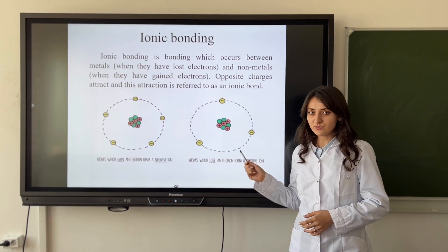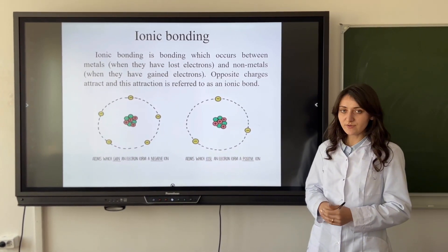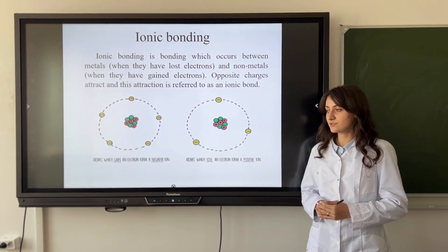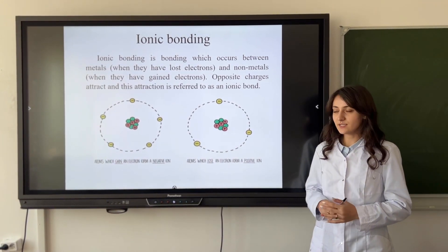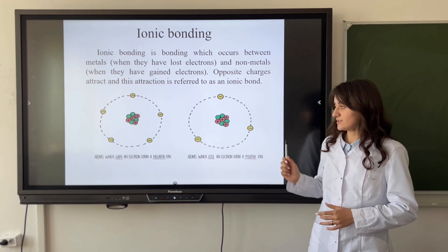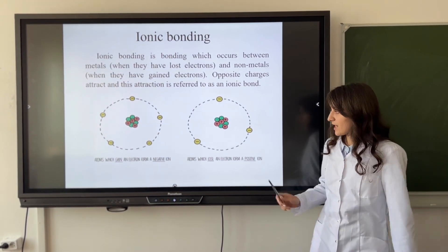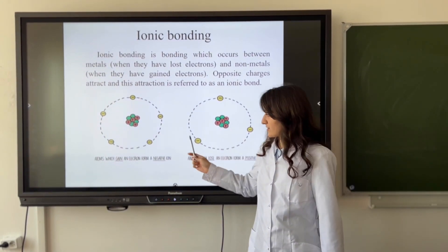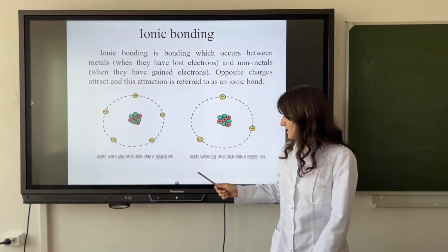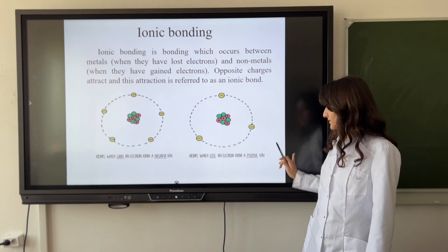Now we'll talk about ionic bonding. Ionic bonding is formed between metals when they lose electrons, and non-metals when they have gained electrons. Opposite charges attract, and this attraction is referred to as an ionic bond. Atoms which gain an electron form a negative ion, and atoms which lose an electron form a positive ion.